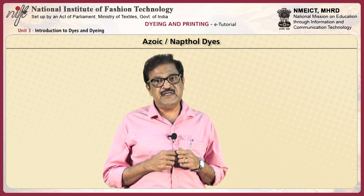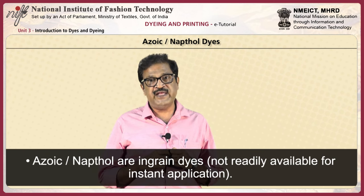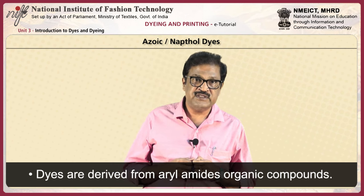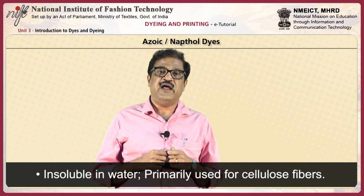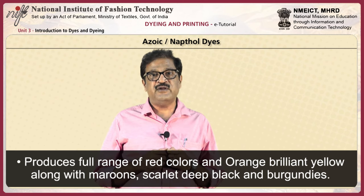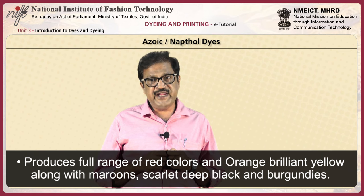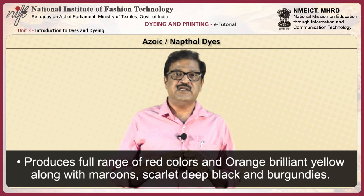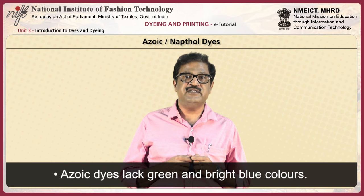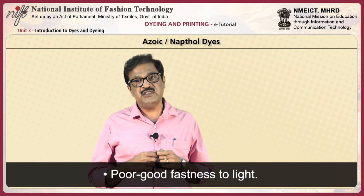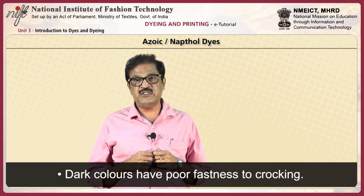Azoic or naphthol dyes: azoic or naphthol dyes are ingrained dyes not readily available for instant application. Dyes are derived from arylamide's organic compounds. They are insoluble in water and primarily used for cellulosic fibers. They produce a full range of red colors and orange, brilliant yellow, along with maroons, scarlet, deep black, and burgundies. Azoic dyes lack green and bright blue colors. They have good color fastness to washing and dry cleaning. Poor to good fastness to light. Dark colors have poor fastness to crocking. The dyeing process is complex and time-consuming.